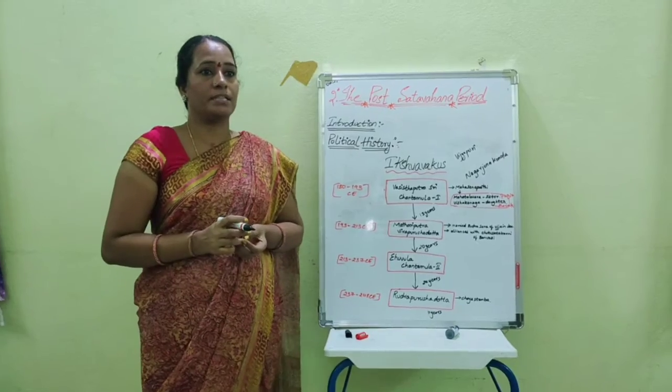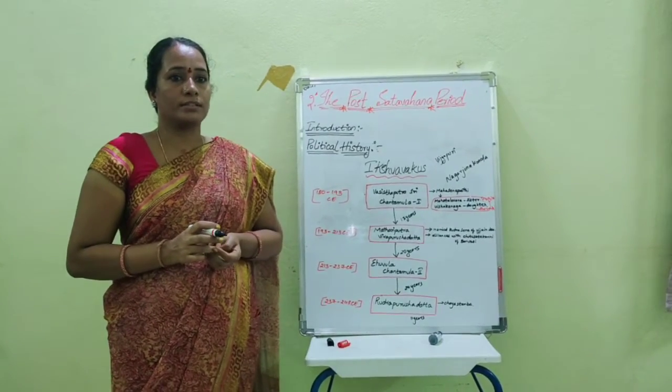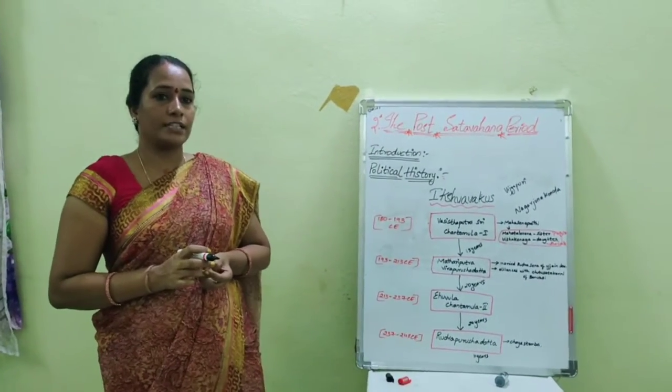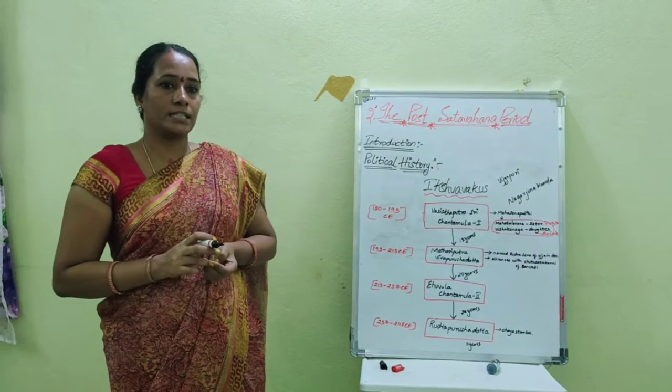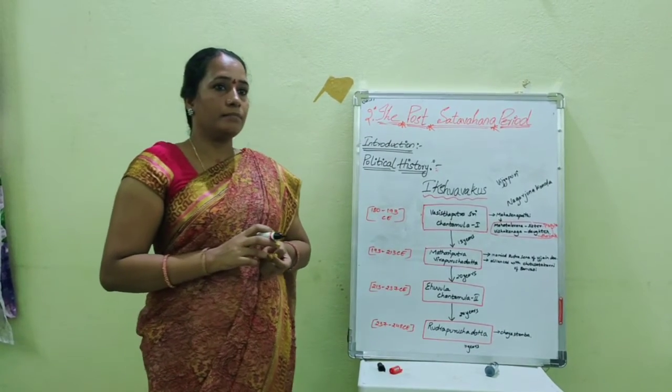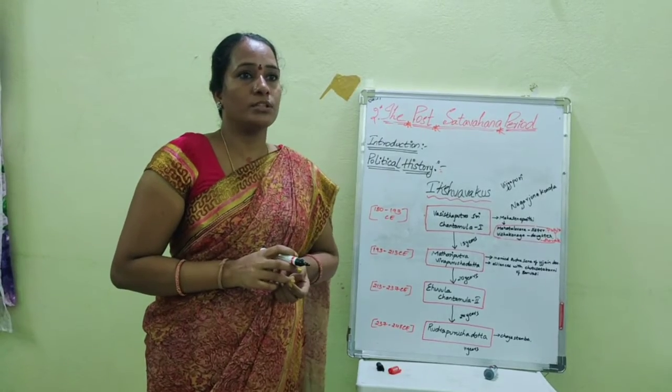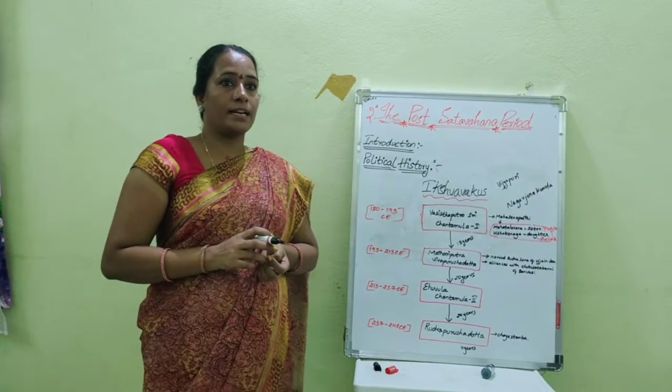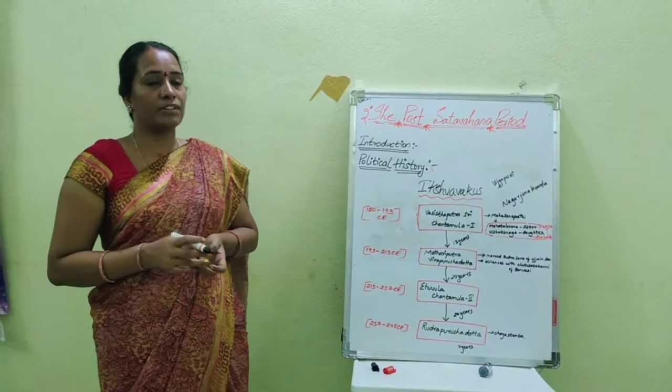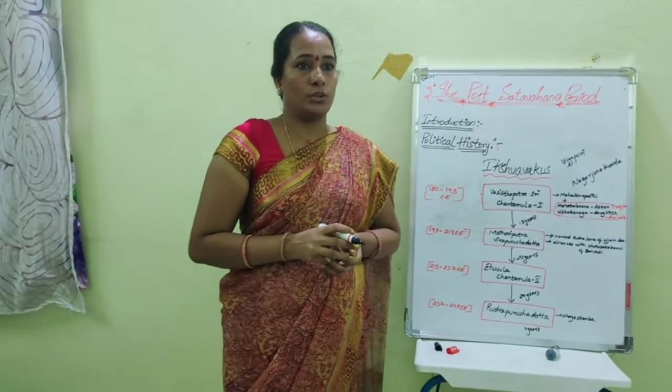Veera Purushadatta was a peaceful and kind person towards Vedic religion and especially Buddhism, as he converted to Buddhism. He gave liberal donations to Viharas and Mahachaityas, from epigraphic inscriptions at Nagarjuna Konda.